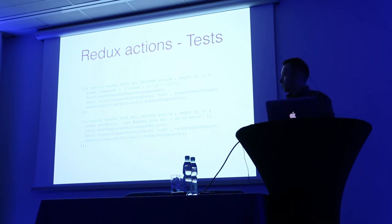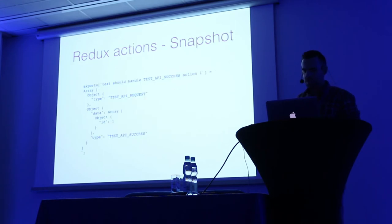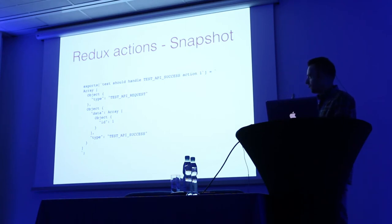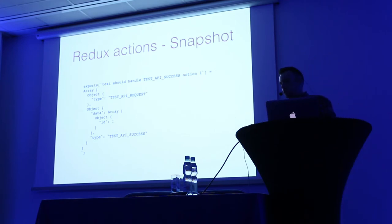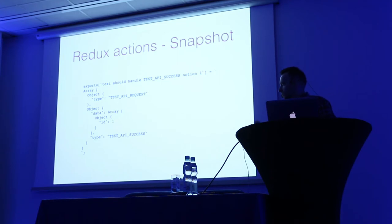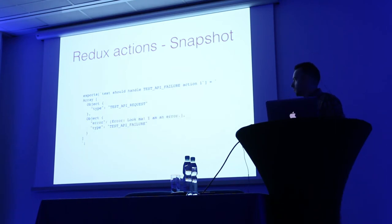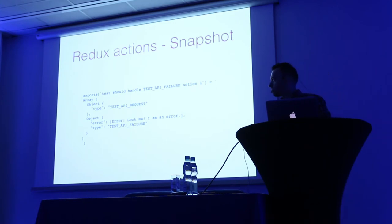For the failure case, I mock an error and use expect toMatchSnapshot. The success snapshot looks like this - I think this is nice to read. When there is a success case, you have dispatched an API request so you can set loading to true and show a loading state, and then I see you dispatched a success with the data itself. With the failure it's the same - it dispatches a request, then dispatches a failure with this error. I really find this useful for Redux, so I suggest you try it.